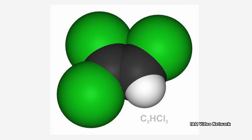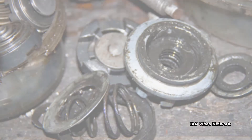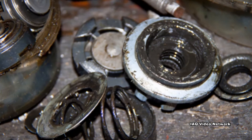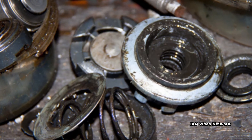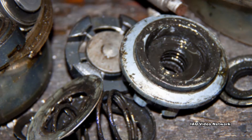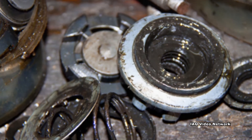Trichloroethylene, also known as TCE, is a non-flammable, colorless liquid with a somewhat sweet odor. It is used mainly as a solvent to remove grease from metal parts and is also used in some adhesives, paint removers, and spot removers.